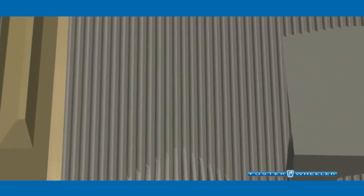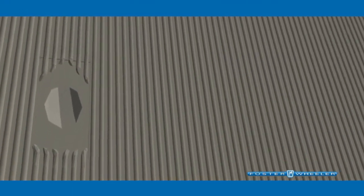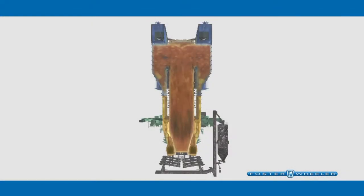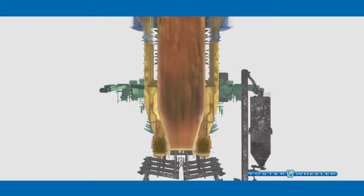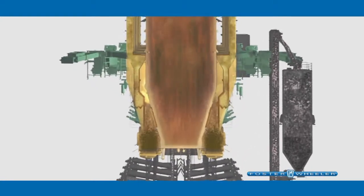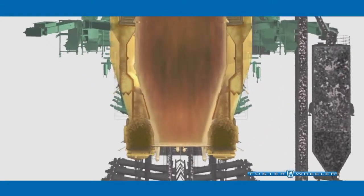Additional secondary combustion air is fed through ports located higher up in the furnace. The way this air is introduced into the CFB results in vigorous mixing of the solid fuel, limestone, and ash particles, allowing the CFB to cleanly burn almost any combustible material.